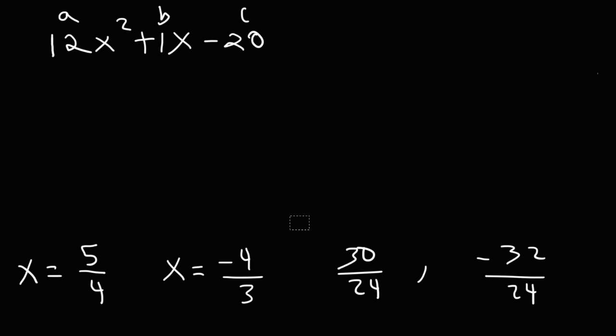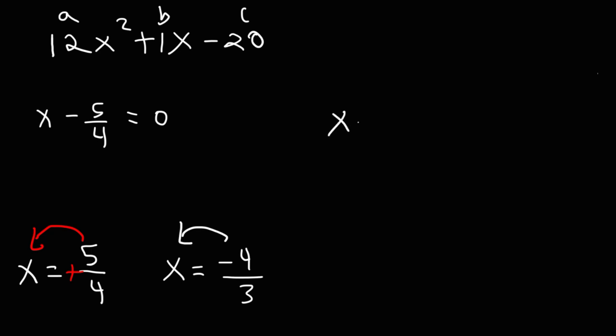So now, once we have these two solutions, what do we need to do next? What we want to do is move the 5 over 4 to the other side. It's positive on the right side, so it's going to be negative on the left side. Negative 4 over 3, we want to move it to this side. It's negative on the right side, but it's going to be positive on the left side. So as you move it from the right side to the left side, just change the sign.